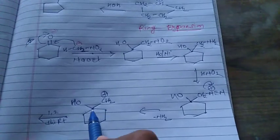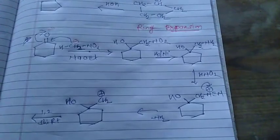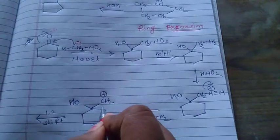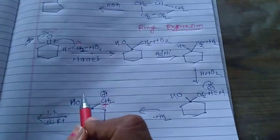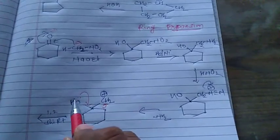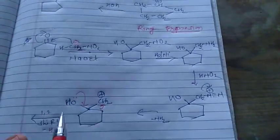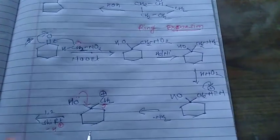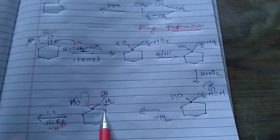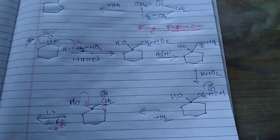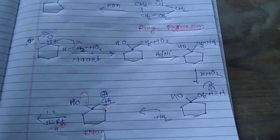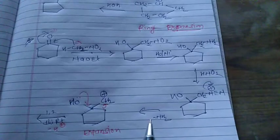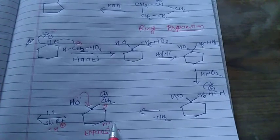In the 1,2 shift — carbon 1 and carbon 2 — this carbon is shifted. At the same time, this oxygen, which has a lone pair, is shifted, and there is a removal of H plus. This is a 6-membered ring; there is an attack of this carbon entering into the cycle. This 6-membered ring gets converted to a 7-membered ring — this is ring expansion.